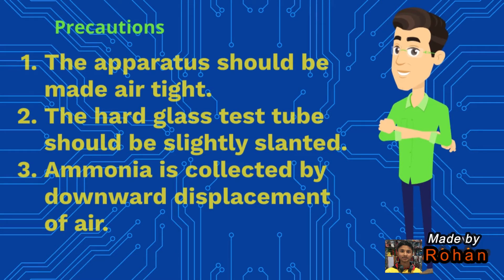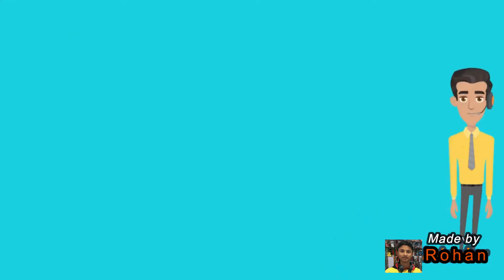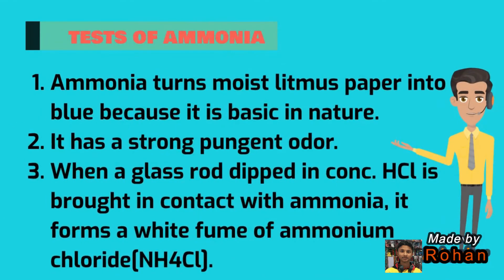After heating, ammonia is produced and collected in a gas jar by downward displacement of air. Precautions: one, the apparatus should be made airtight; two, the hard glass test tube should be slightly slanted; three, ammonia is collected by downward displacement of air.